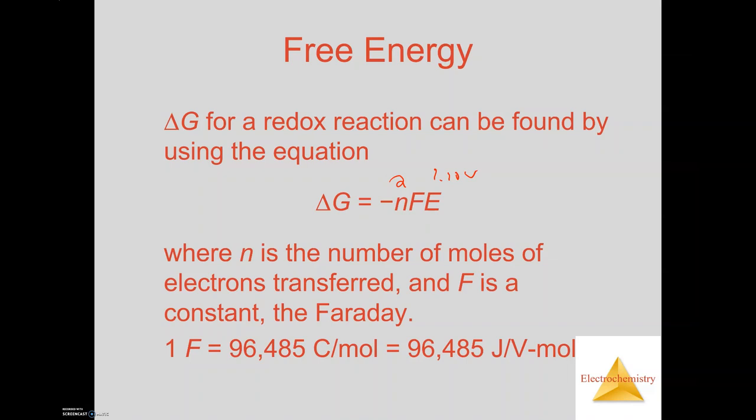When we go through and we solve for that, we will end up with a negative value for Gibbs free energy, and so that tells us that that particular cell is spontaneous. Now the value that I obtained from doing negative 2 times 96,485 times 1.1 is negative 212,267 joules, so that'd be negative 212 kilojoules.